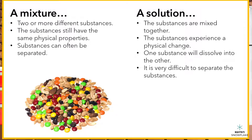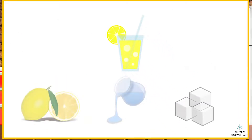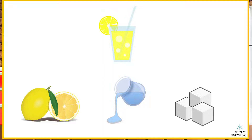Can you think of an example of something we make in the kitchen that is a solution? Solutions have physical changes, and it is hard for the substances to be separated. Would lemonade be a solution? You're right. To make lemonade, we combine lemon juice, water, and sugar. The ingredients get mixed together until the sugar dissolves into the water and lemon juice. This is a solution.